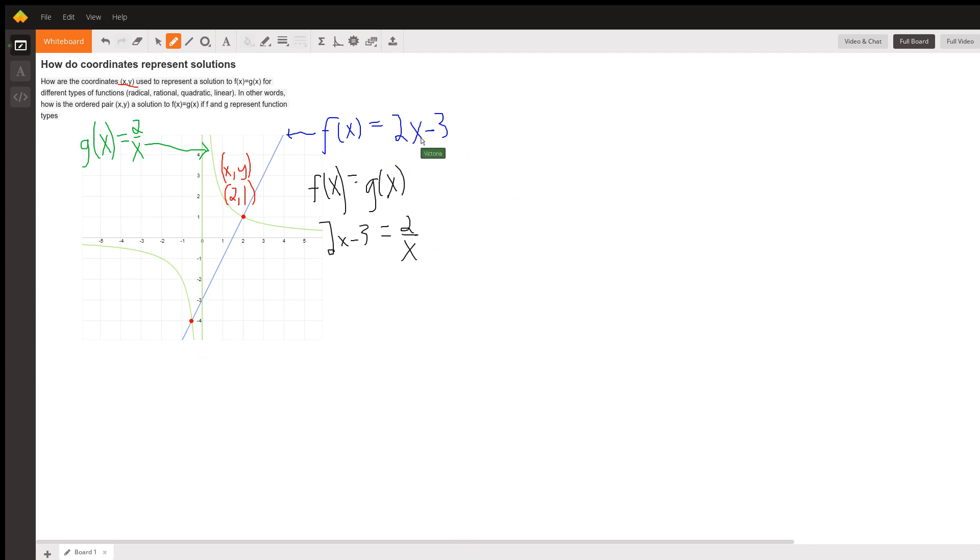And if we plug in negative 1 half up here, what is f of negative 1 half? Well, it's 2 times negative 1 half minus 3. So this is minus 1 minus 3, and so the y value is negative 4.